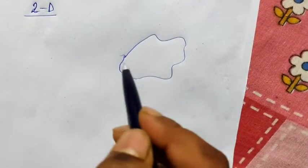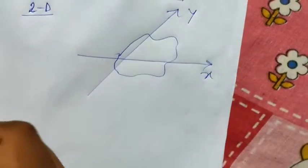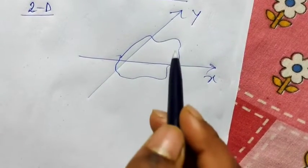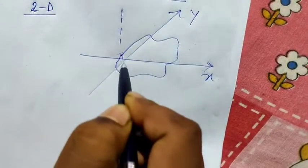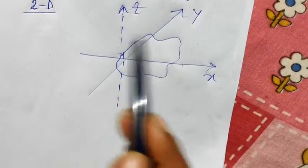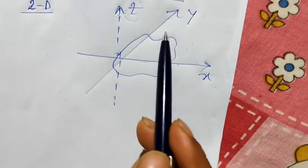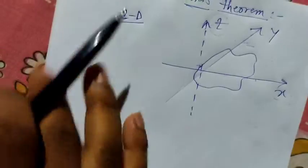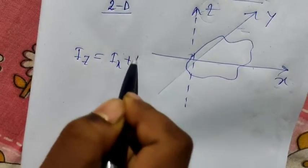The body lies in the x-axis and y-axis plane. The z-axis is perpendicular to the xy plane. The moment of inertia about the z-axis equals the moment of inertia about the x-axis plus the moment of inertia about the y-axis. So this is basically the Perpendicular Axis Theorem: Iz = Ix + Iy.